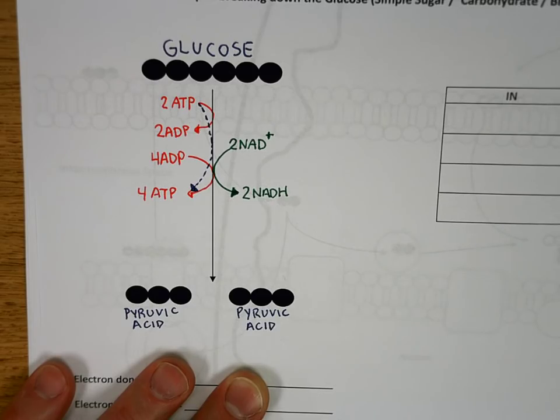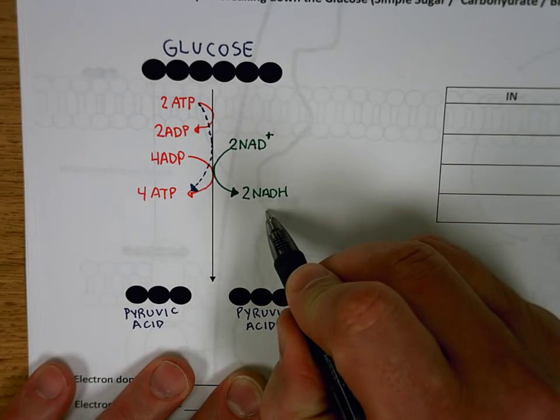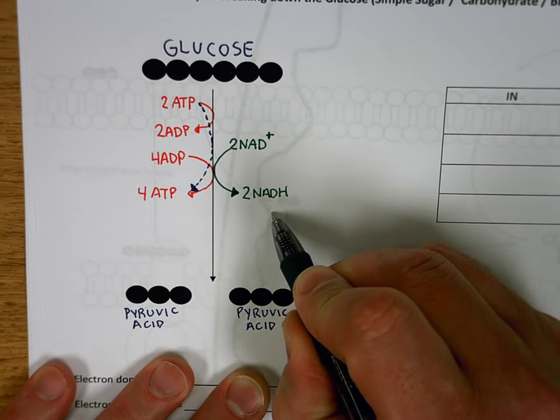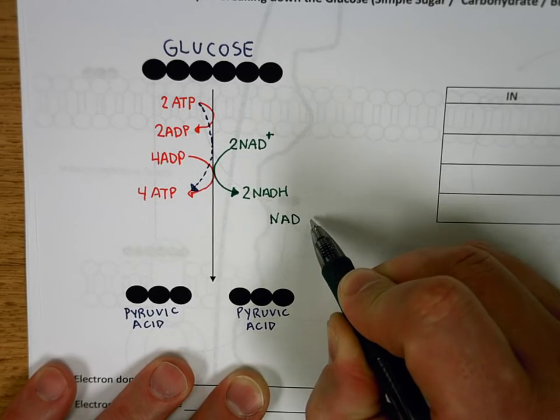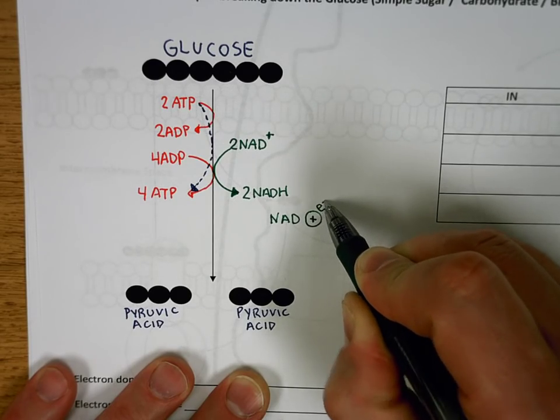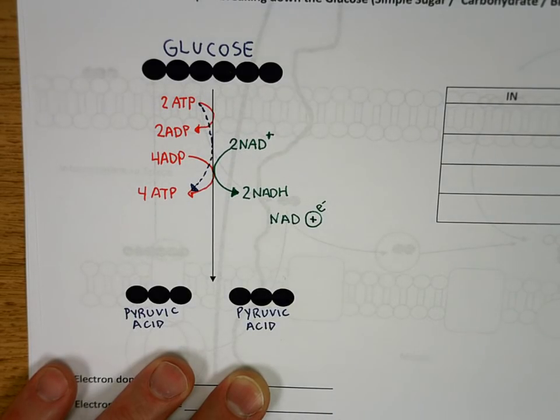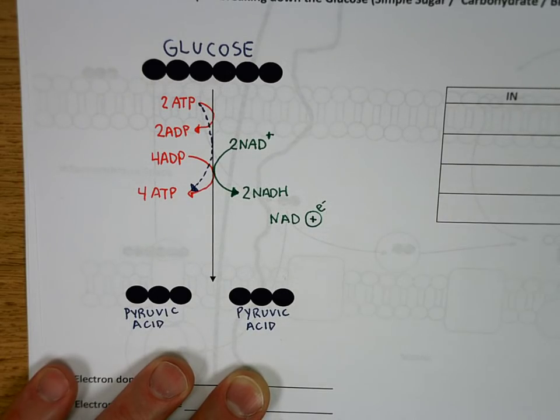And you might say, why is that? It should be NADE. Well, the electrons don't travel by themselves. They travel as a hydrogen atom. So if we were going to draw this in the symbolism of that, we would say what it really is is NADH and a hydrogen atom, which would be a proton and an electron. So it's carrying this electron as part of that hydrogen atom.